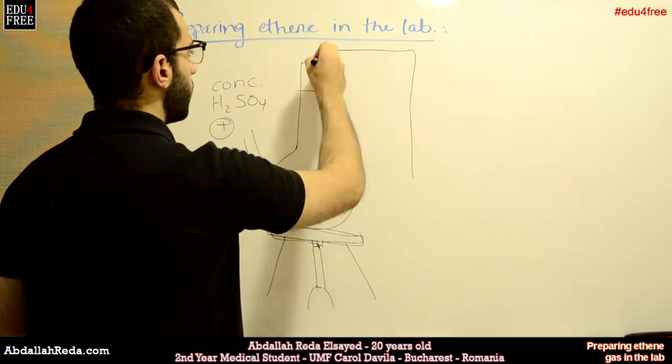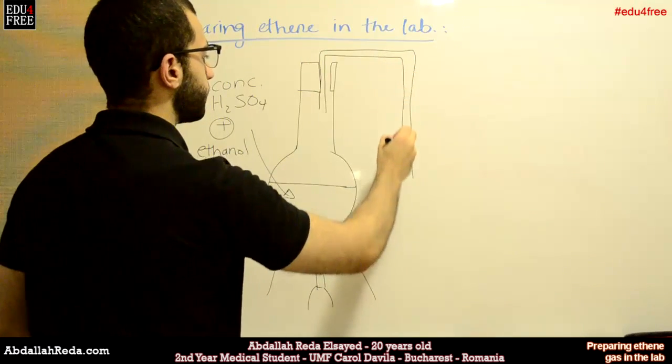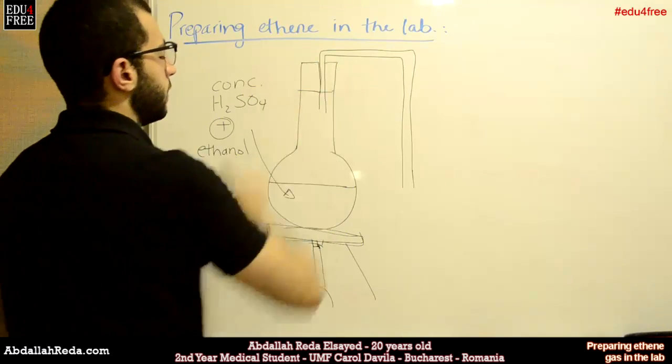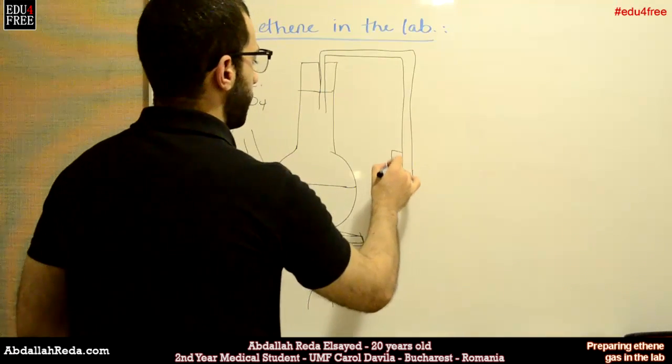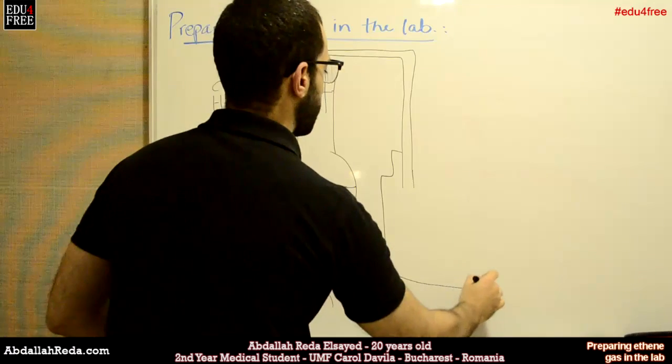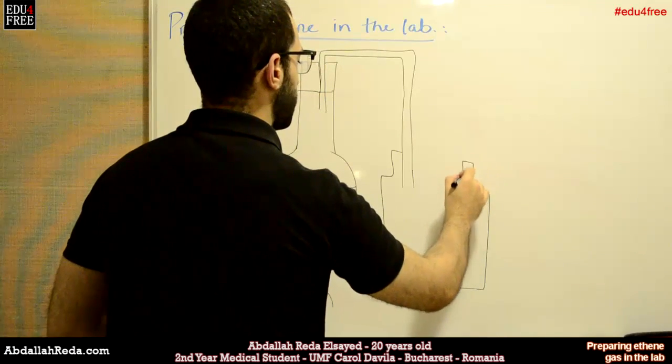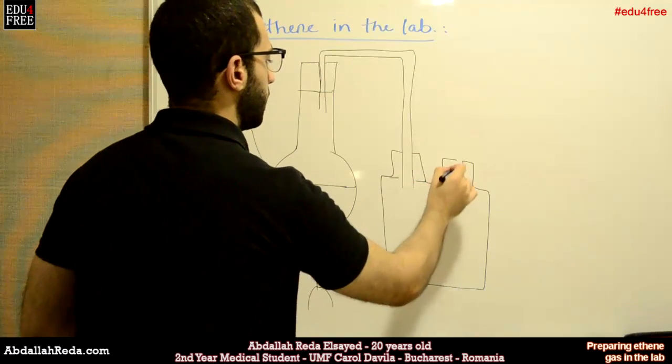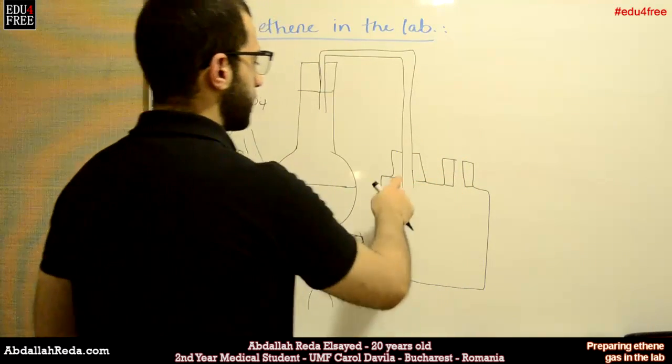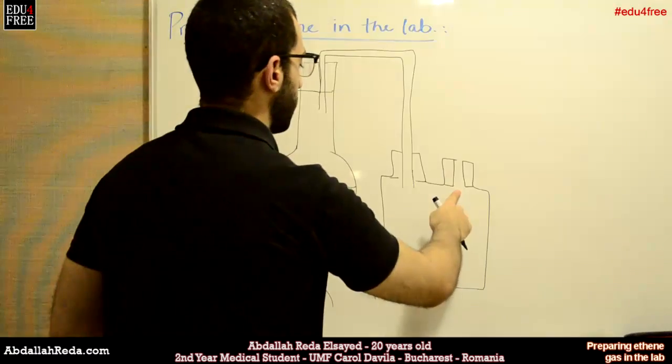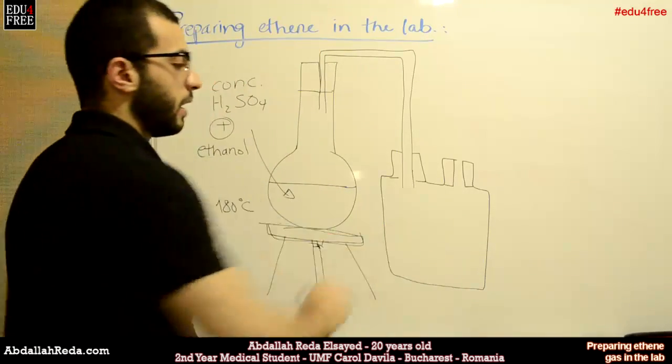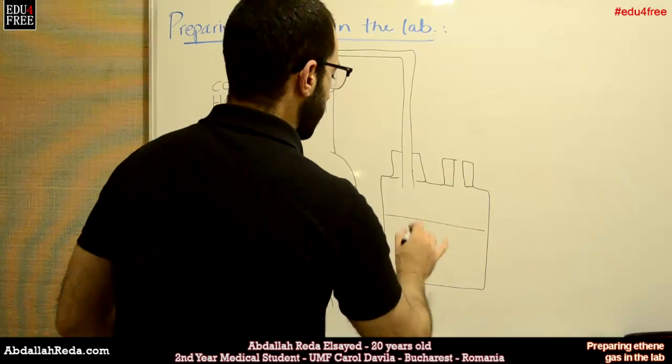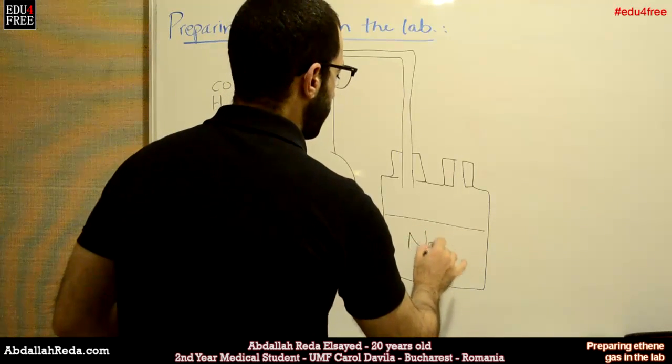This connecting tube will go into another flask with two openings. The flask looks like this—this is the first opening, and this is the second opening. In this flask or container, we'll have another liquid, which is sodium hydroxide.